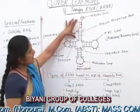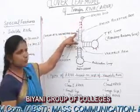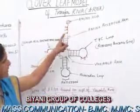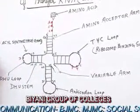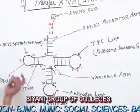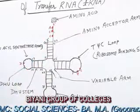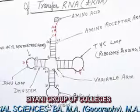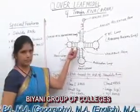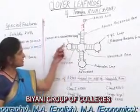This amino acid acceptor arm has some base pairs; at the 5 prime end there is guanine, and at the 3 prime end there is a CCA sequence. The second arm is called the DHU arm or aminoacyl synthetase arm. At this site, the aminoacyl synthetase enzyme binds to the transfer RNA, which helps in binding the amino acid to the transfer RNA. This arm is named the DHU arm because of the presence of the unusual base dihydrouridine. This arm has a stem of about 4 base pairs and 7 to 8 bases are present in the DHU loop.